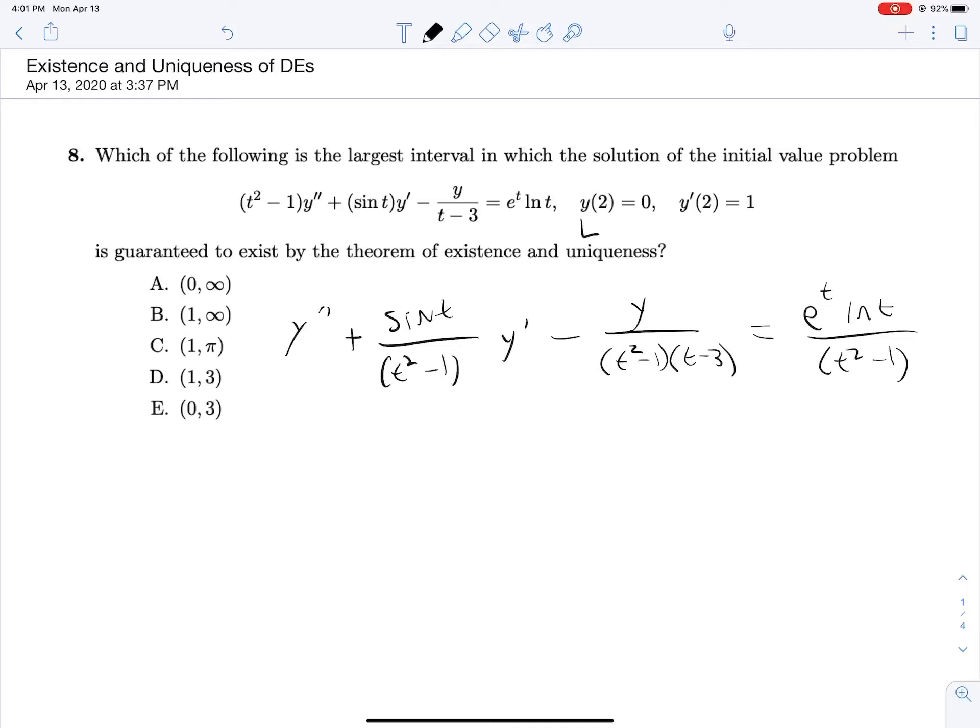And we have some initial condition here, y of 2 equals 0. I'll just put a 2 in the middle of the number line. Now what we're looking for here is the longest distance that we can go on this number line in either direction before we hit some kind of discontinuity. We're looking for any discontinuities in what's multiplied by y prime, what's multiplied by y, and even this term.